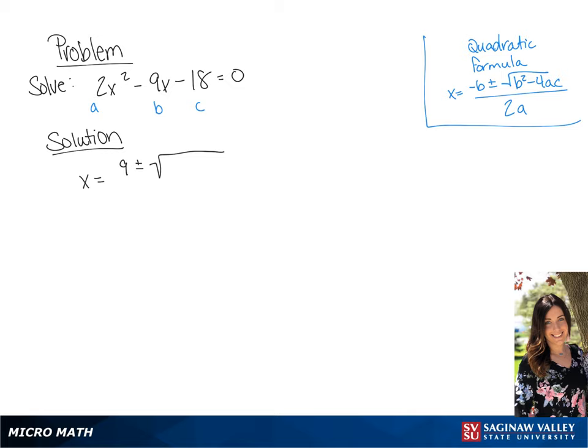This is going to give us 9 plus or minus the square root of 81 plus 144 all over 4.